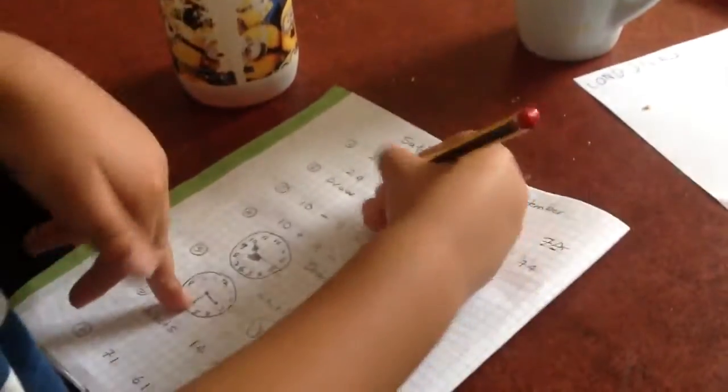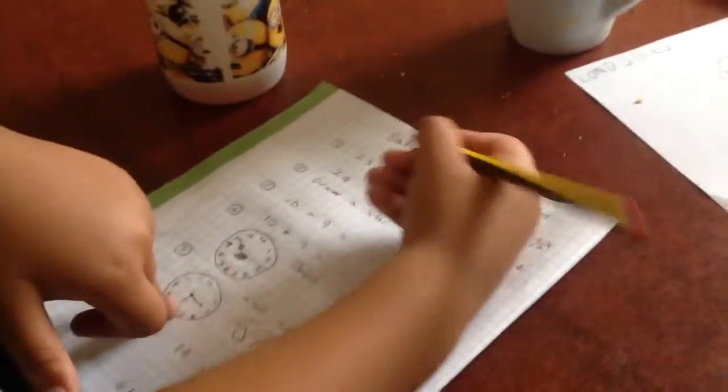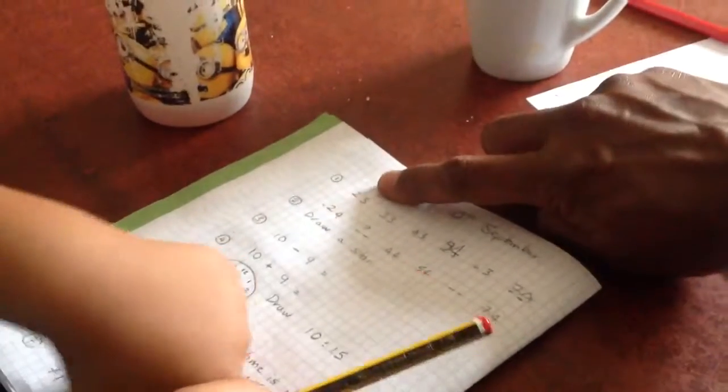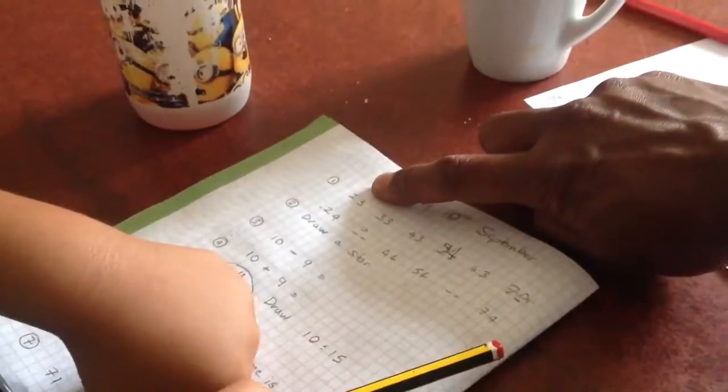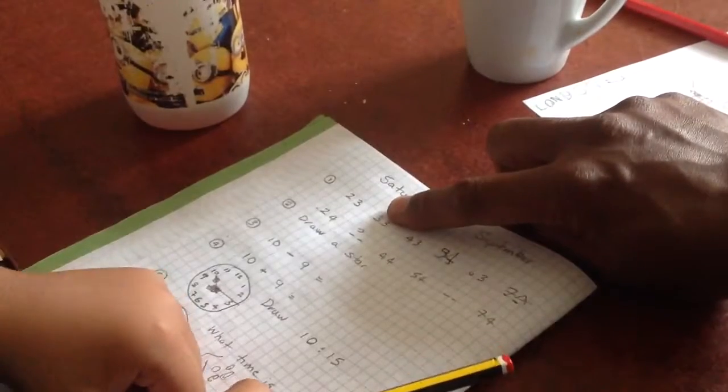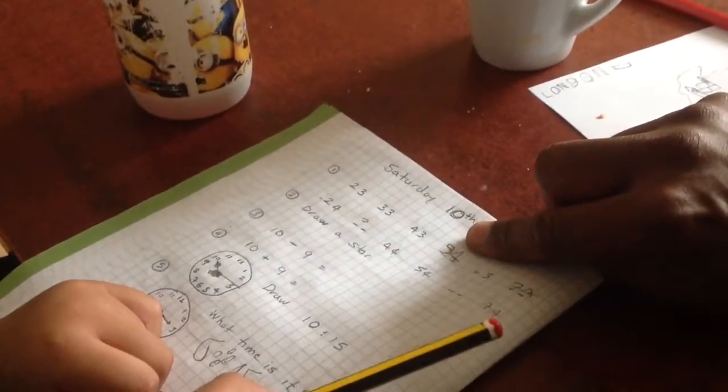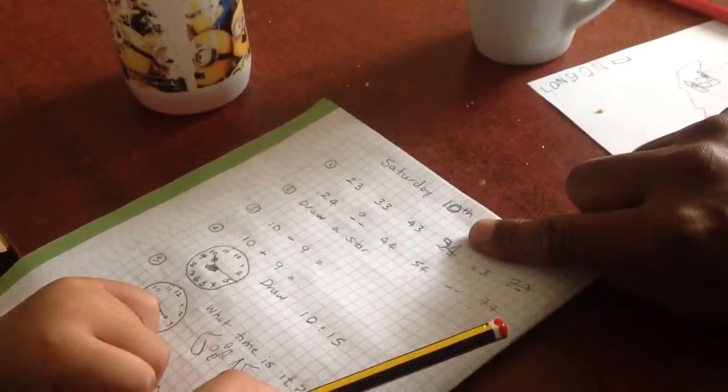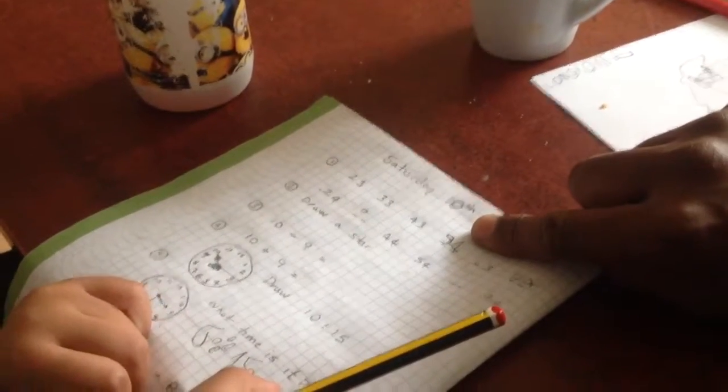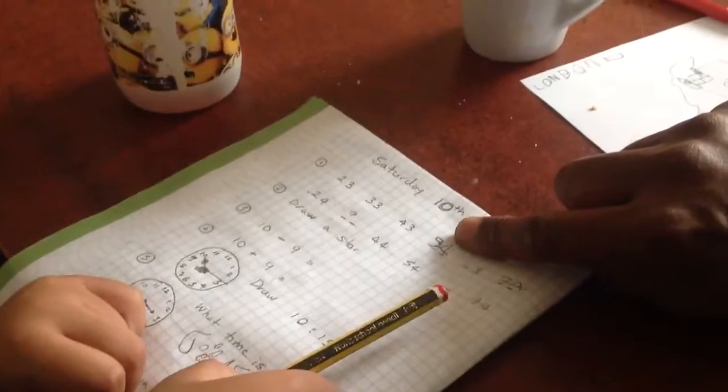Is that correct? Check the number sequence, is that correct? What's that? 23, 33, 43, 43, 53. So what did you write? You wrote 54.